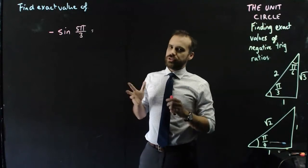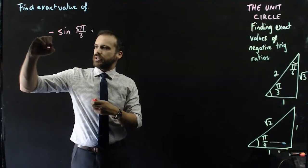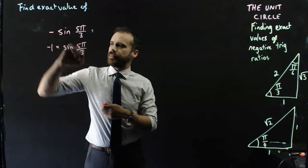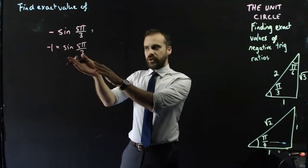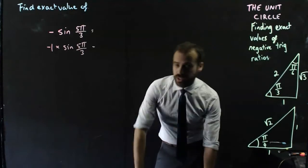Now there's no real trick to this, it's not complicated at all. All we do is treat this as negative 1 times sine 5π/3, and then we just deal with sine 5π/3 as we have in the past, and then just multiply by negative 1 at the end.